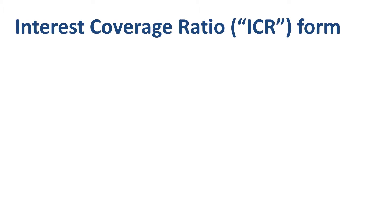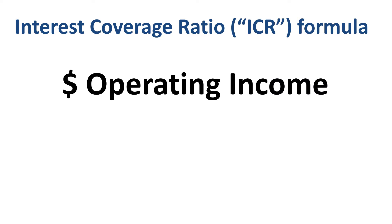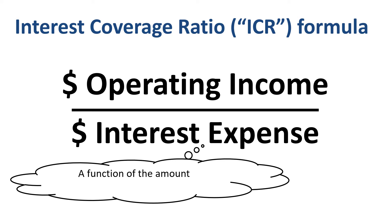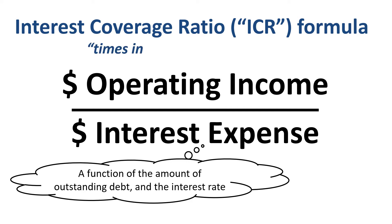The formula for the interest coverage ratio is operating income, or a variation thereof, divided by interest expense. Both of these can be found in the income statement. The amount of interest expense is a function of the amount of outstanding debt and the interest rate the company pays on that debt. With operating income in the numerator and interest expense in the denominator, another name for the interest coverage ratio is 'times interest earned' — how many times the interest do you earn in operating income?